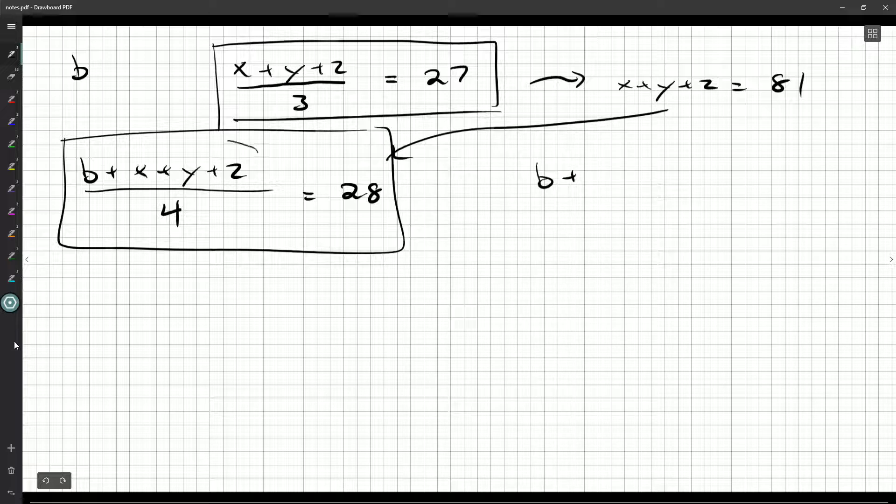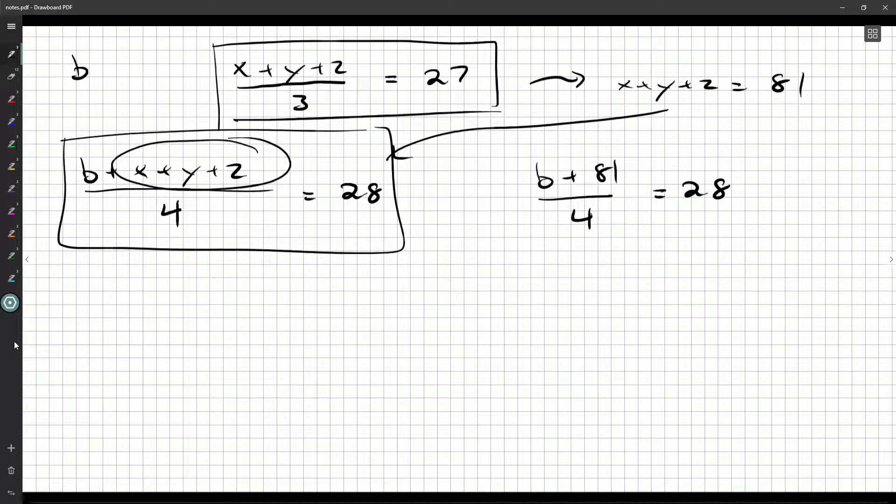See that B plus X plus Y plus Z is just 81. I don't know X, I don't know Y. We don't care right now. I know that X plus Y plus Z is 81. So B plus 81 over 4 is 28.